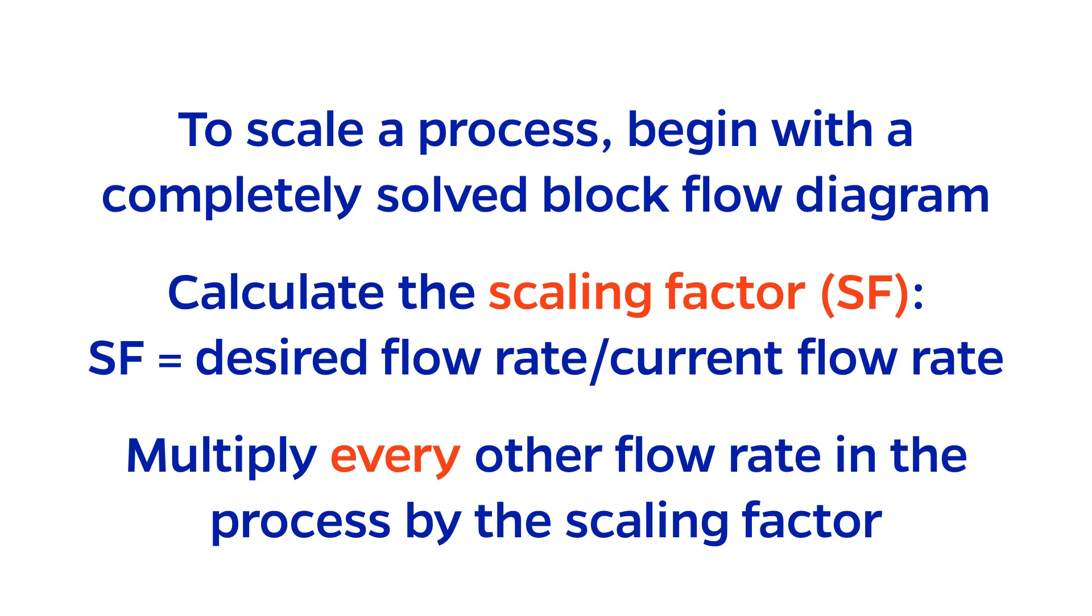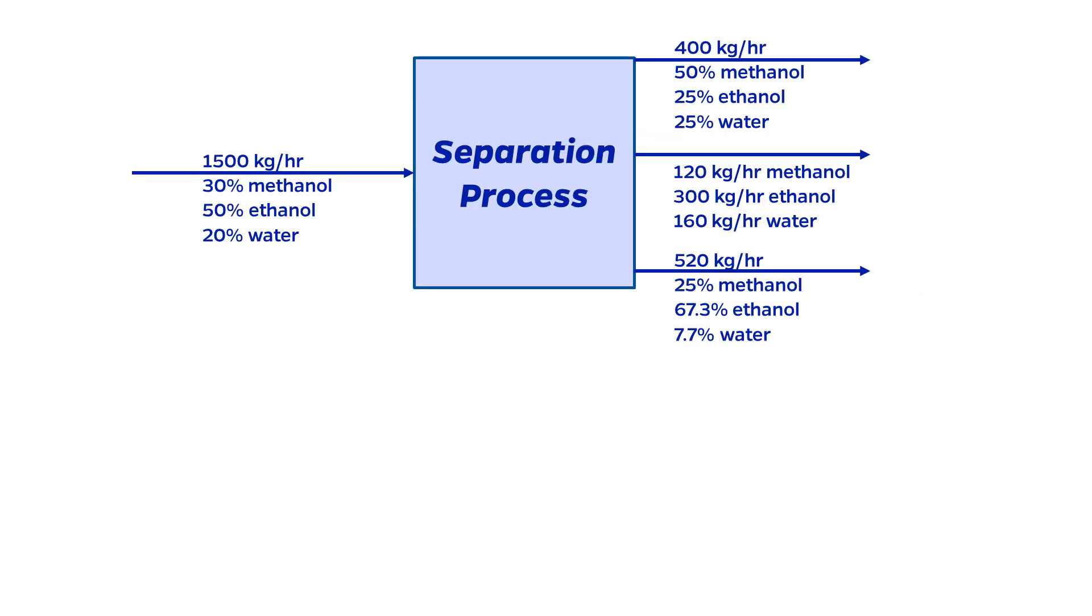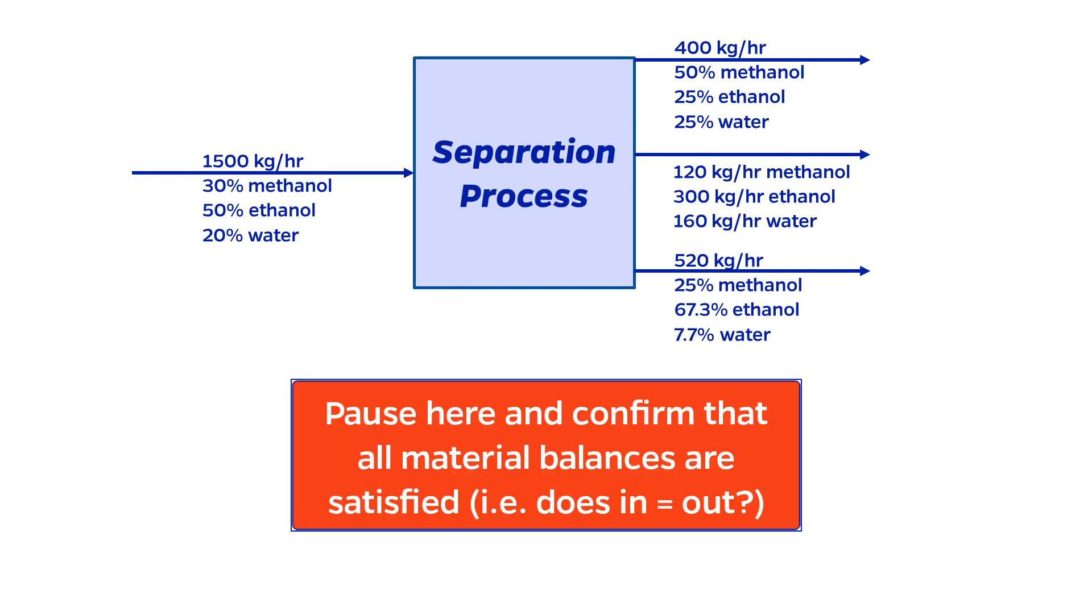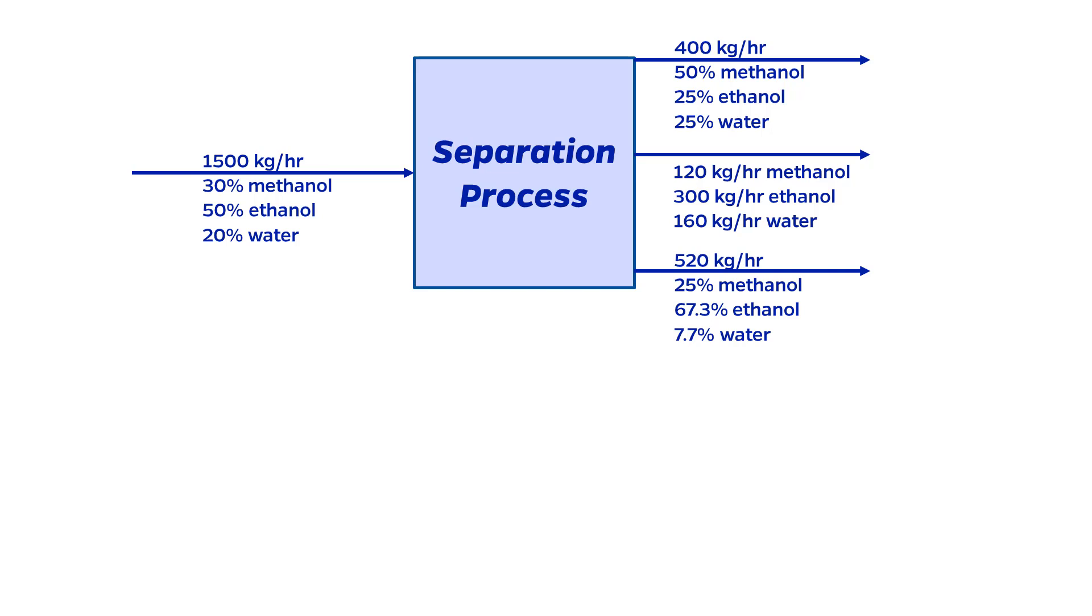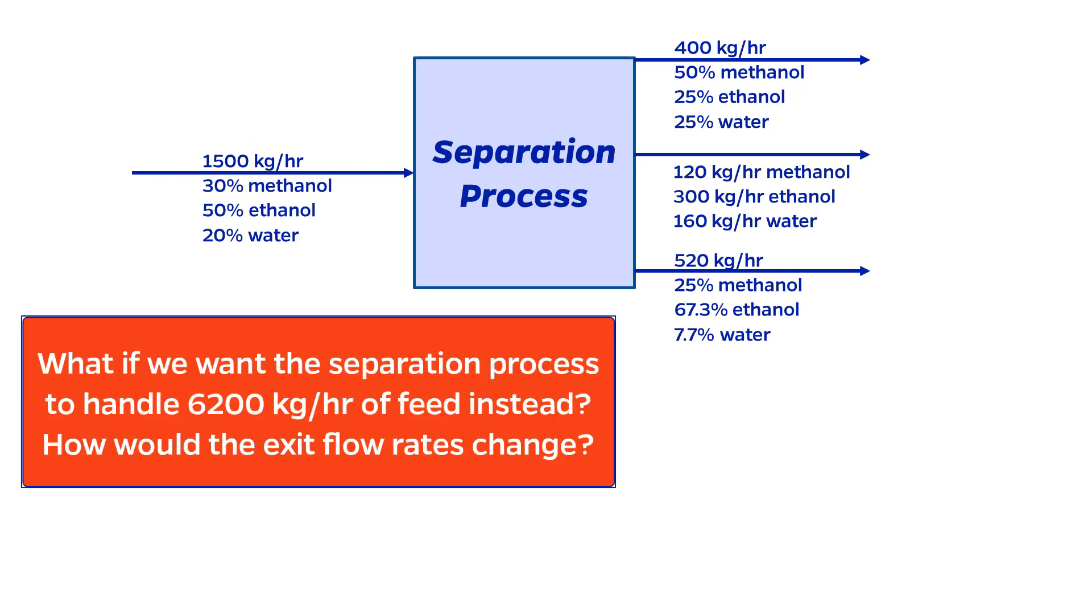The result is the scaled process. Note that we never touch the composition variables because they all remain the same. Let's see an example. For practice, I recommend pausing the video here and confirming that all the material balances are valid. As you can tell, the feed flow rate is 1,500 kilograms per hour. But, how would the flow rates change if it is desired to process more of this feed?